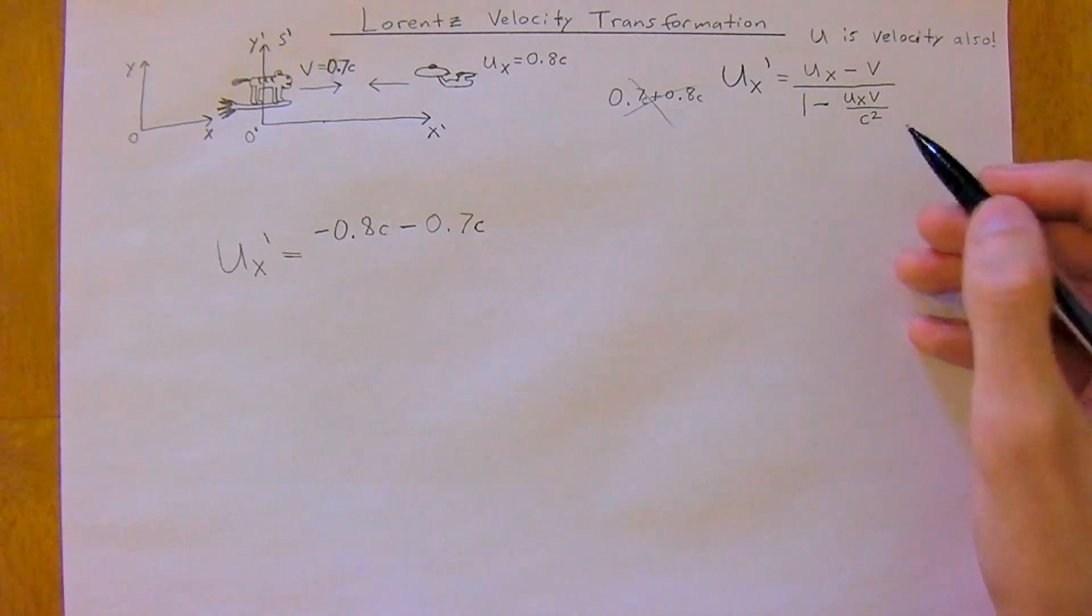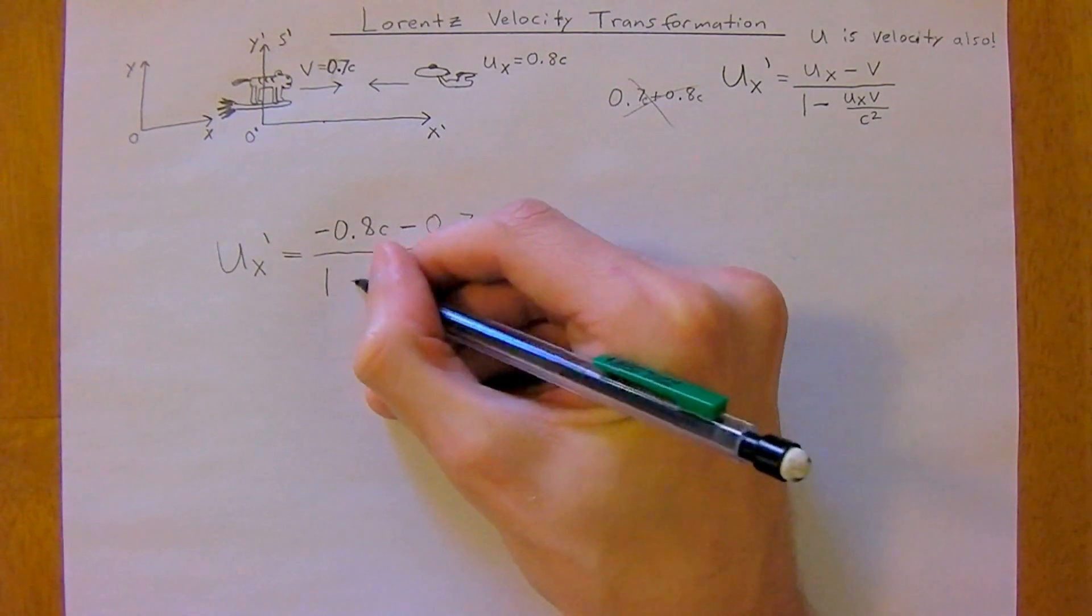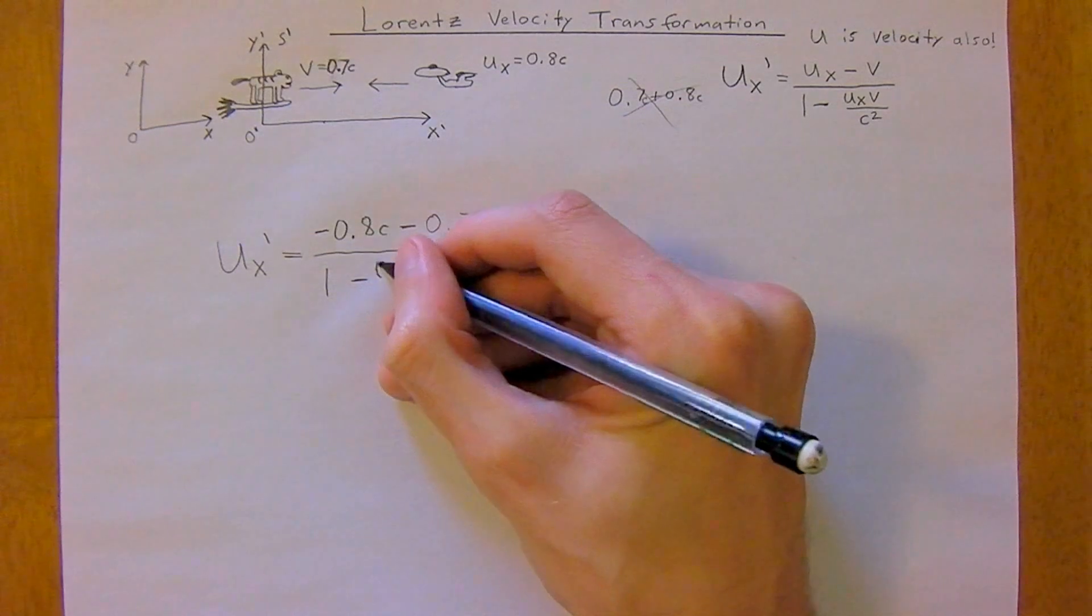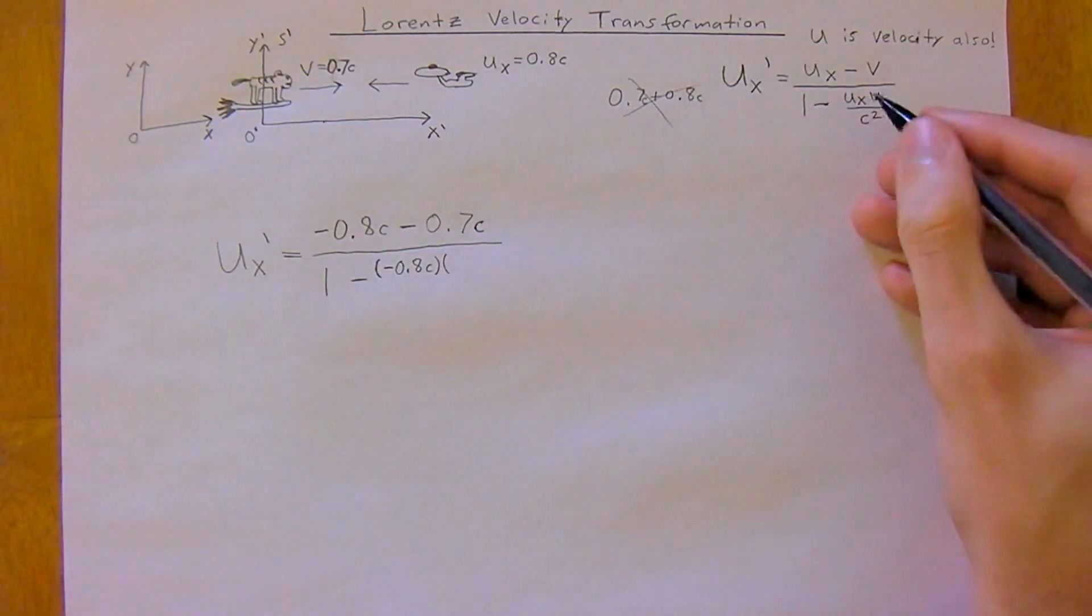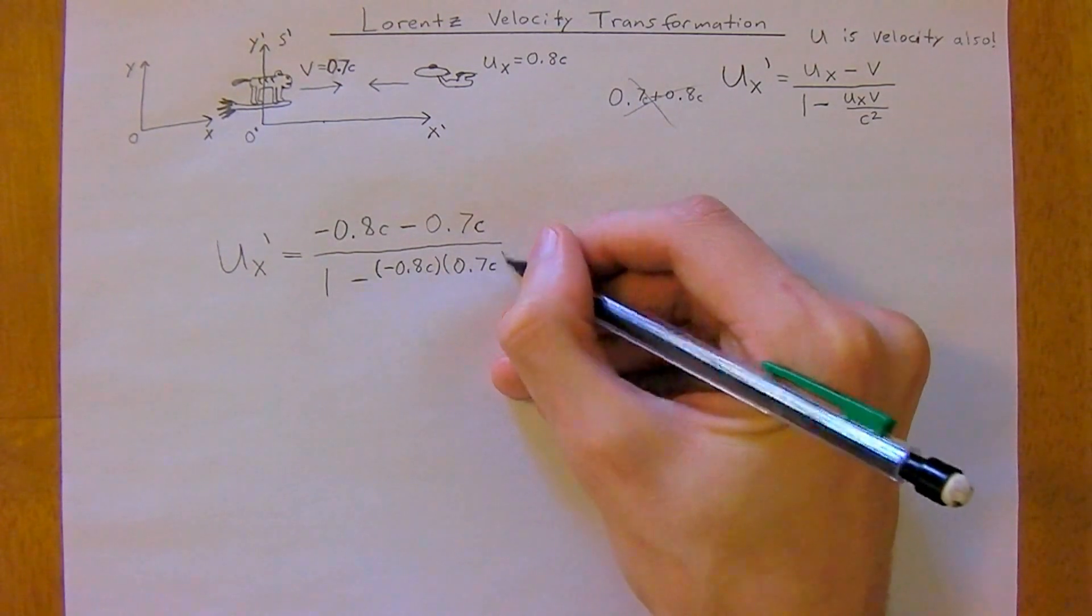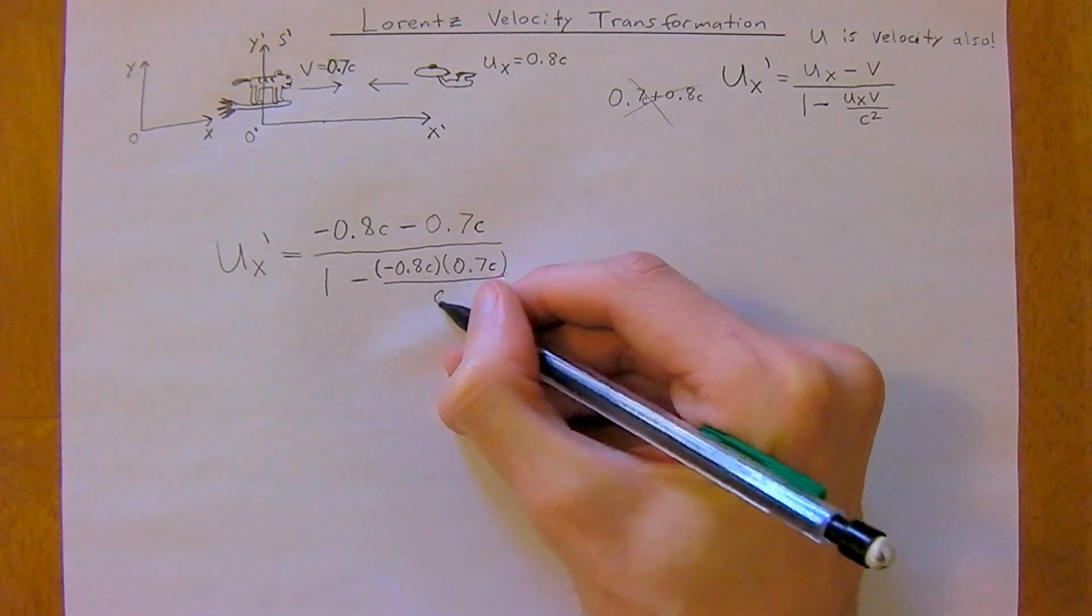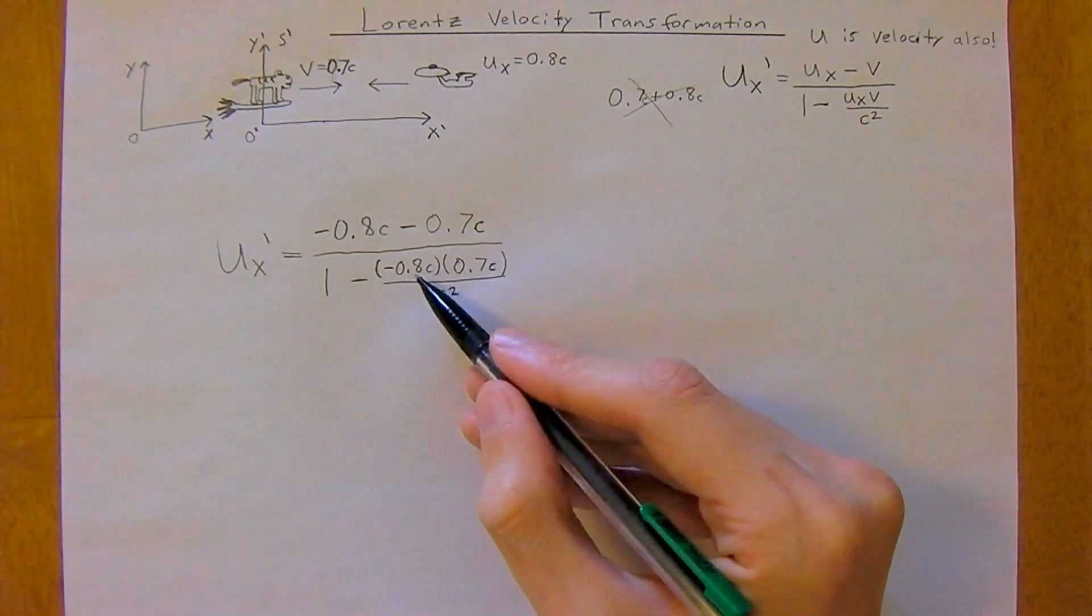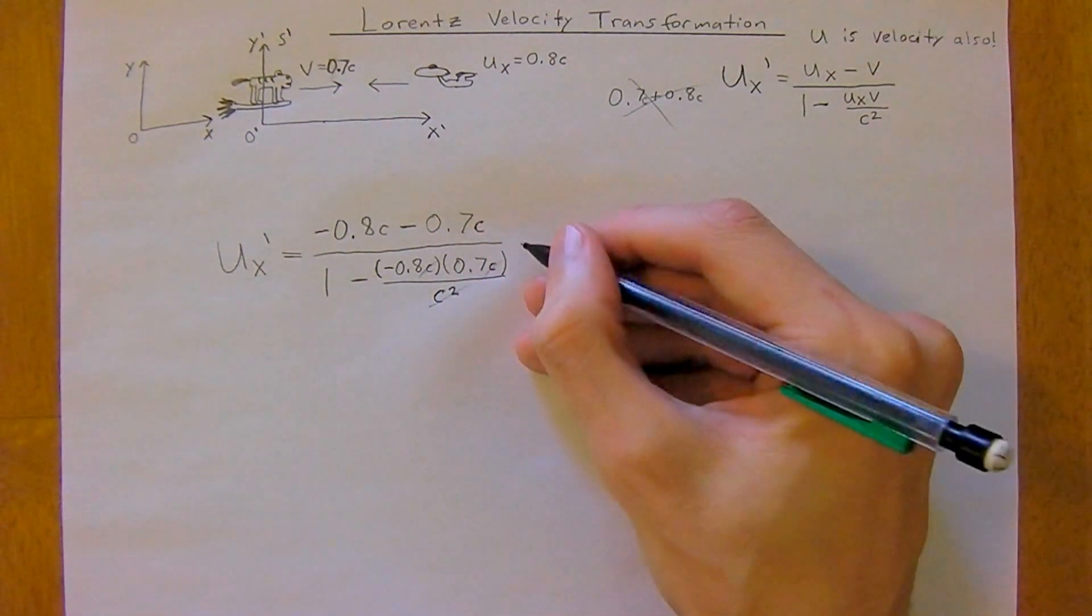You can do the derivation yourself if you want, but it's easier to just get it down to this point. This derivation helps simplify things. It's divided by 1 minus the velocity of the spaceship, which is negative 0.8C, times the velocity of the cat on the broomstick, 0.7C. I try to keep these fun—hopefully you enjoy the cat on a broomstick—divided by c squared.